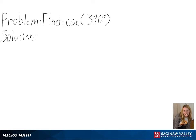Our problem is to find cosecant of 390 degrees. To solve this, we will be using a unit circle.